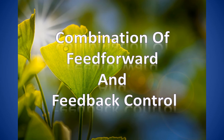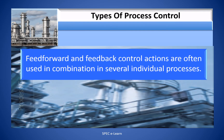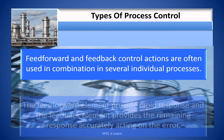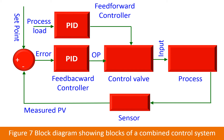Combination of feed forward and feedback control. Feed forward and feedback control actions are often used in combination in several individual processes. The feed forward element provides rapid response and the feedback element provides the remaining response, accurately acting on the error. This block diagram shows the blocks of a combined feed forward and feedback control system. It consists of two controllers: one feed forward controller which acts on the plant load disturbances, and a feedback controller which acts on the error due to changes in the measured process variable.